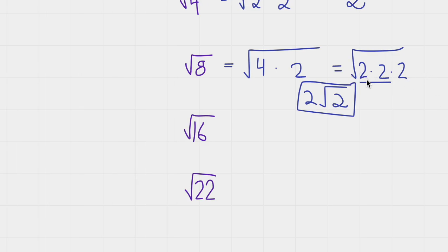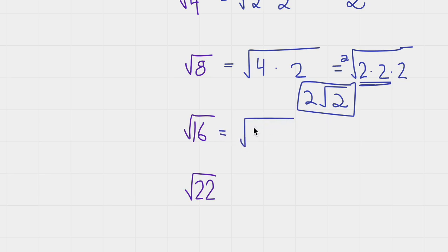Because there were three 2s inside the radical sign and the nth root is 2 — since it's a square root — we can take a pair of 2s out to make one 2 outside, and leave the remaining 2 inside the radical sign. Now let's try 16. We know that 4 times 4 is equal to 16. Because this is a square root, anytime a number is repeated inside the radical sign, that number just comes right out. So the answer is 4.